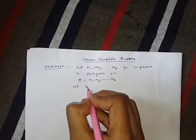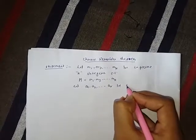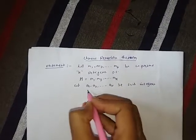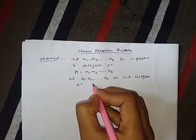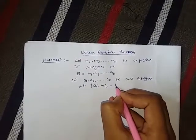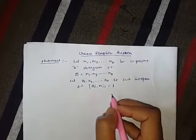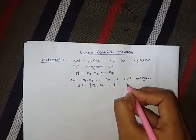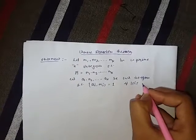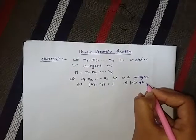Again, let a1, a2, ..., ak be such integers such that the gcd of ai and mi is equal to 1, that is ai and mi are co-prime, for all i such that 1 ≤ i ≤ k.